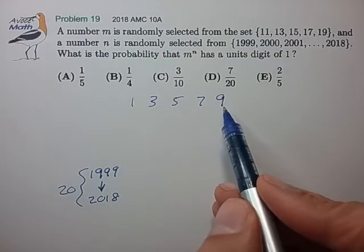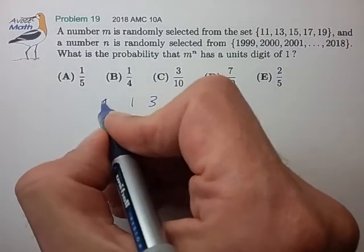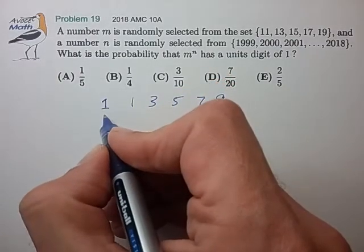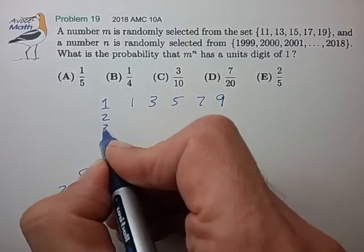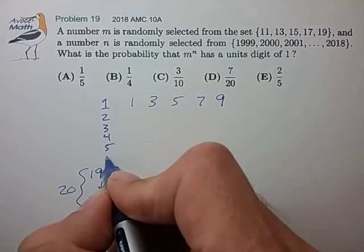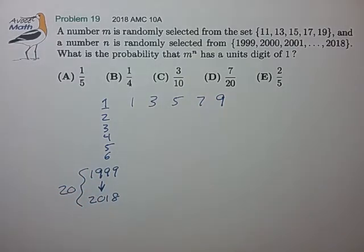So 1, 3, 5, 7, 9 is the exponent of 1. And we're going to calculate some examples of exponents of 2, 3, 4, 5, and 6, just to see how that works.